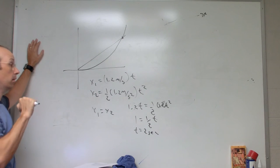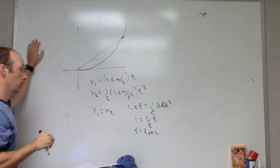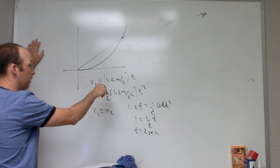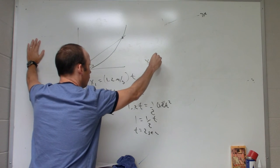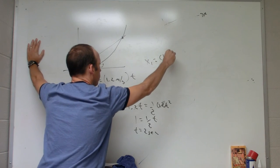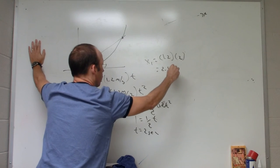So that's when they meet. Where do they meet? Well, now I can put that same time into either one of these functions, and I get x1 equals 1.2 times 2, which is 2.4 meters.